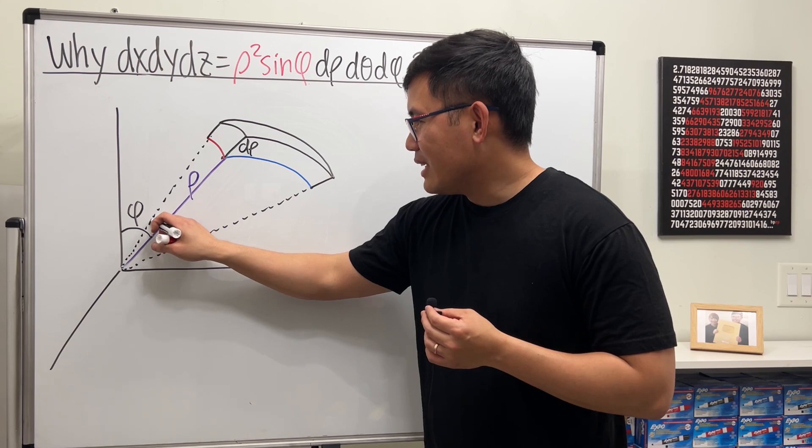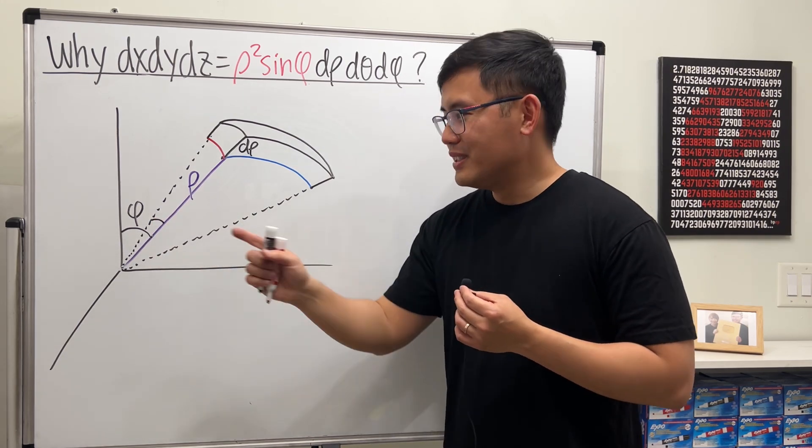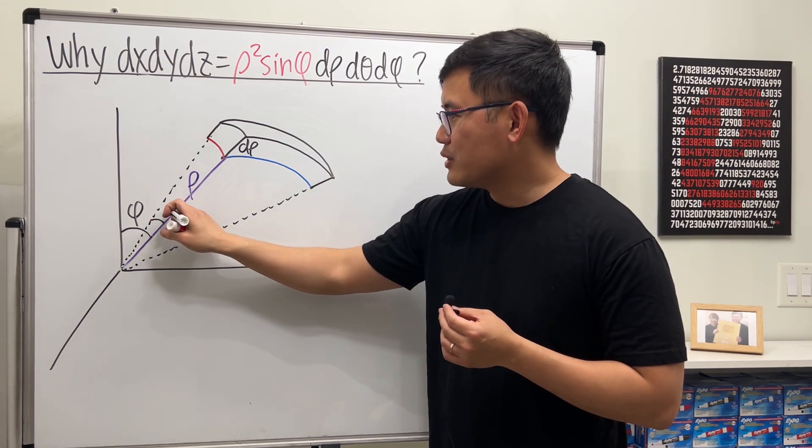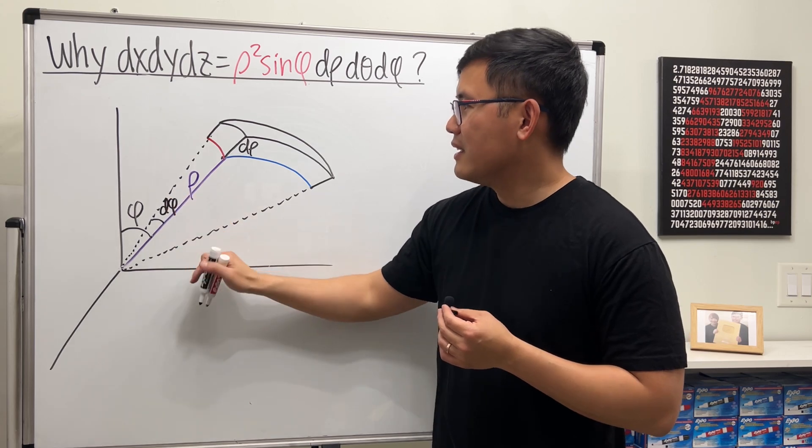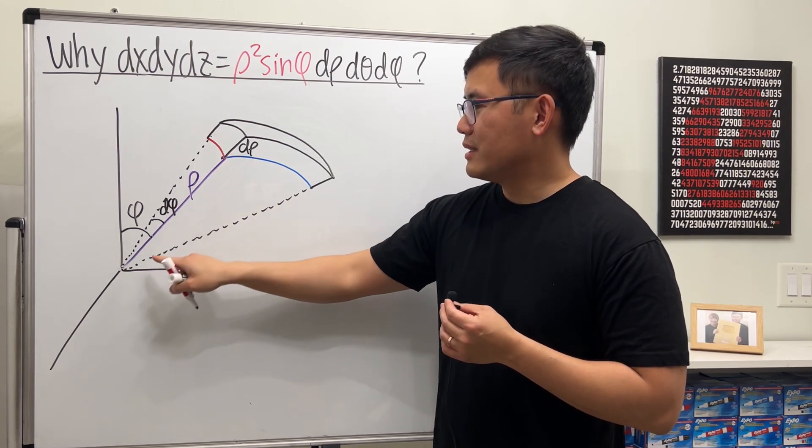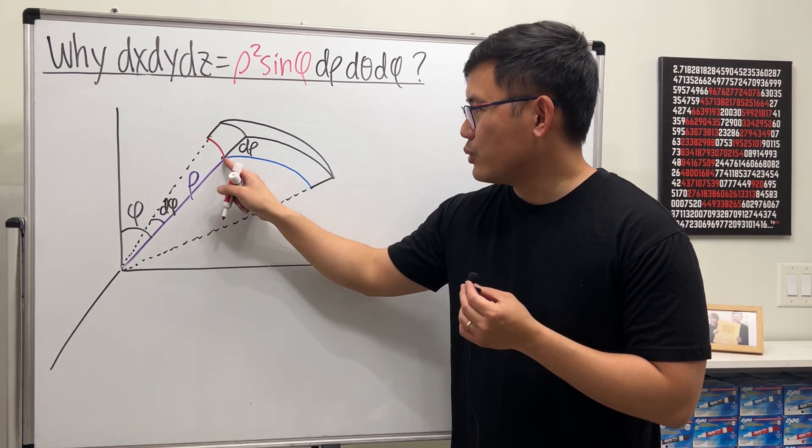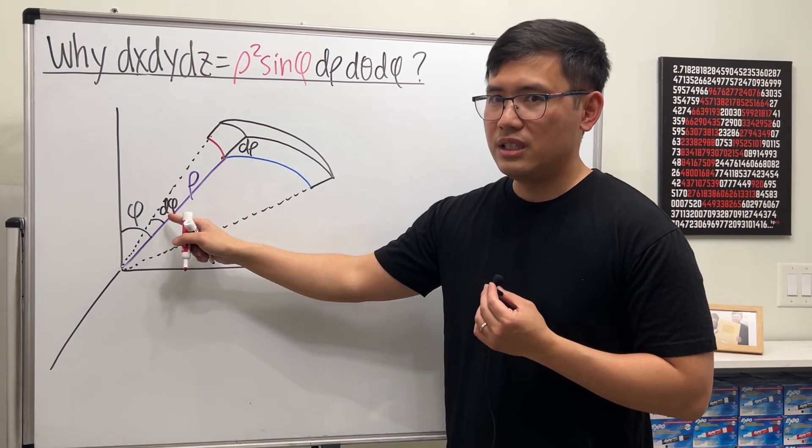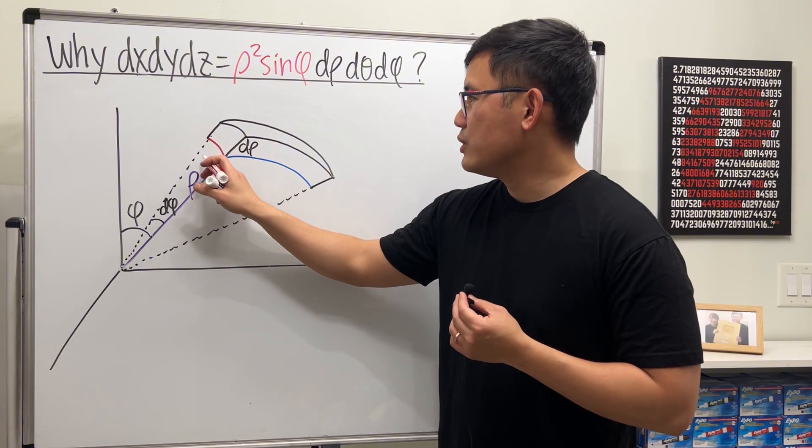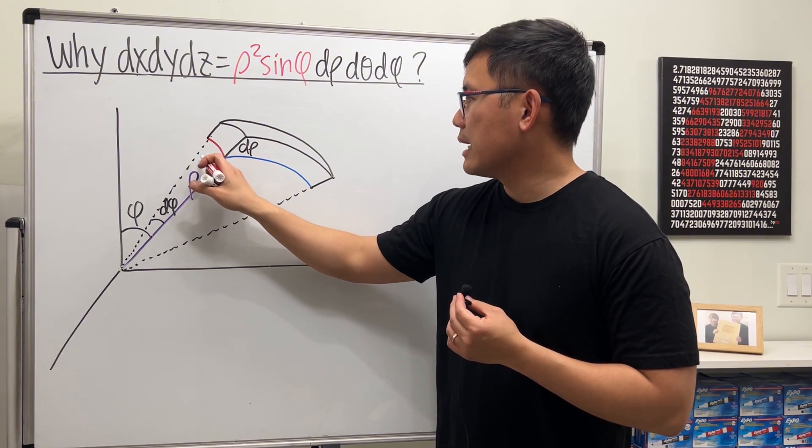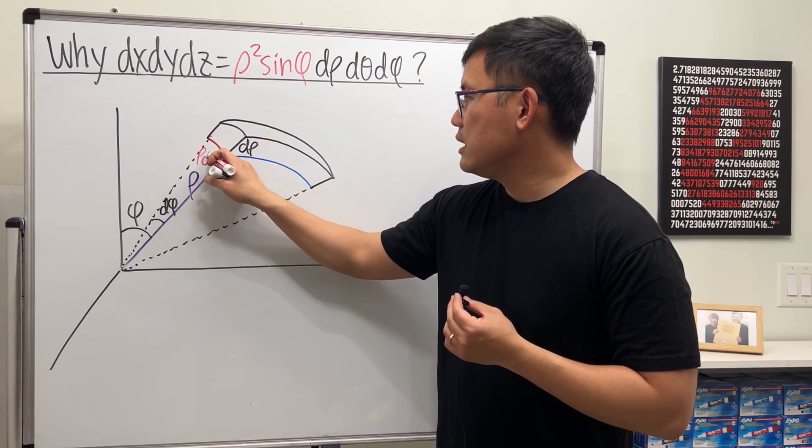That said, this angle here is just a small change of the angle phi, so it's d phi. So this right here is just a small arc. To find the length, we just need a radius, which is rho, times this angle, which is d phi. So this right here is just rho times d phi.